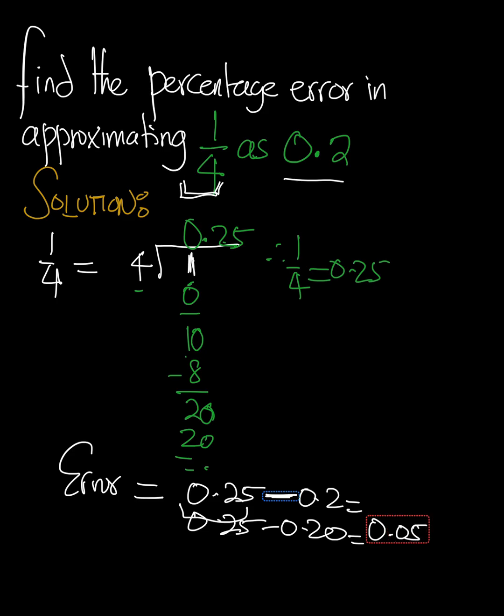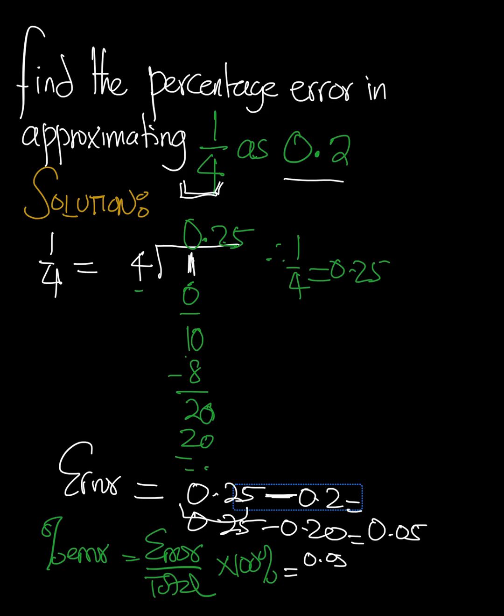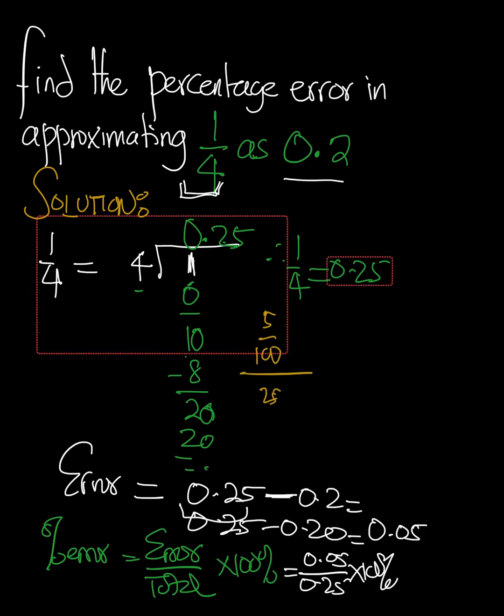But because we're looking for the percentage error, it's going to be that error divided by the total, times 100%. When we do that, we have the error which we just found, 0.05, divided by the total, which is 0.25, multiplied by 100%. If we work that out, the numerator on top is actually 5 over 100, divided by the denominator which is also 25 over 100, multiplied by 100%.